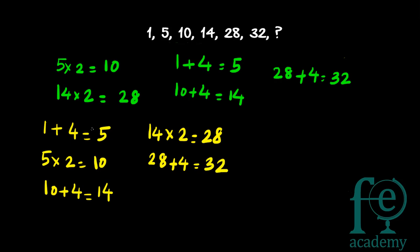This is an interesting pattern. First addition is taking place, then multiplication, then again addition, then multiplication, then again addition. When addition takes place, the constant number 4 is added; when multiplication takes place, the constant number 2 is multiplied. So: first addition by 4, then multiplication by 2, again addition by 4, then multiplication by 2.